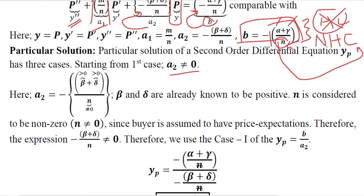Now, a₂ is equal to the negative of these values. We know that β is a positive value, δ is also a positive value, and n is not equal to 0. When all of these values get simplified in this expression, they will not appear as 0. So this a₂ will not be a 0 value.